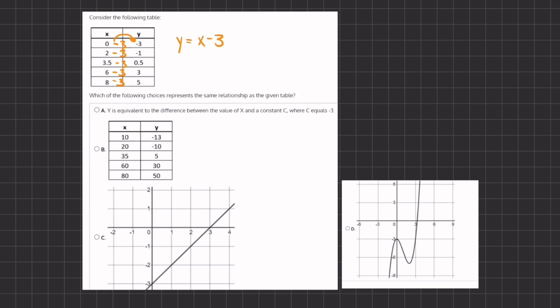Alright, so now that we have a linear function, let's read our options. A says y is equivalent to the difference between the value of x and a constant c, where c equals negative 3. Now let's write this out verbally. We have y is equivalent to the difference between the value of x, and the difference means minus. So we are going to subtract from the constant that we are given, which is negative 3.